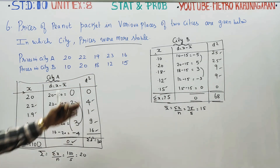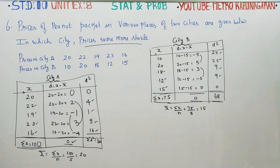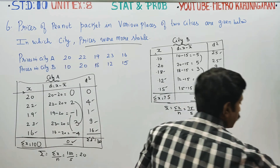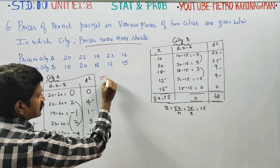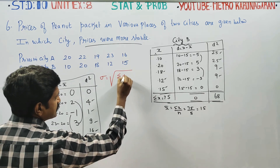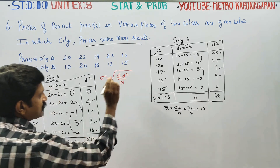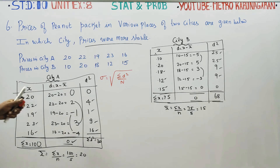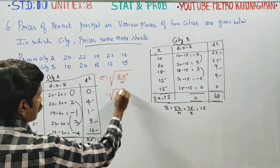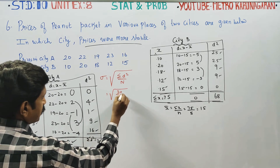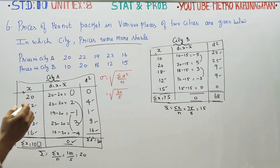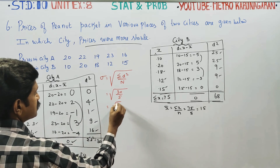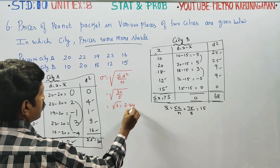After finding City A and City B values, we need the standard deviation. Using the actual mean method, the standard deviation formula is: σ equals square root of sigma d squared by n. For City A: σ equals square root of 30 by 5 equals square root of 6, which is approximately 2.44.